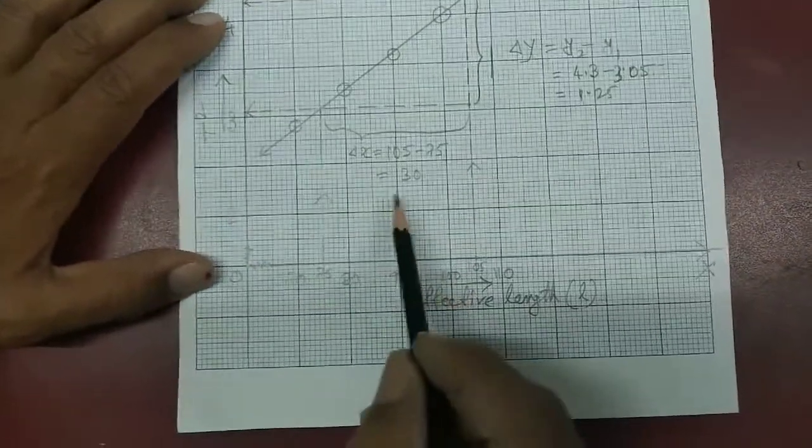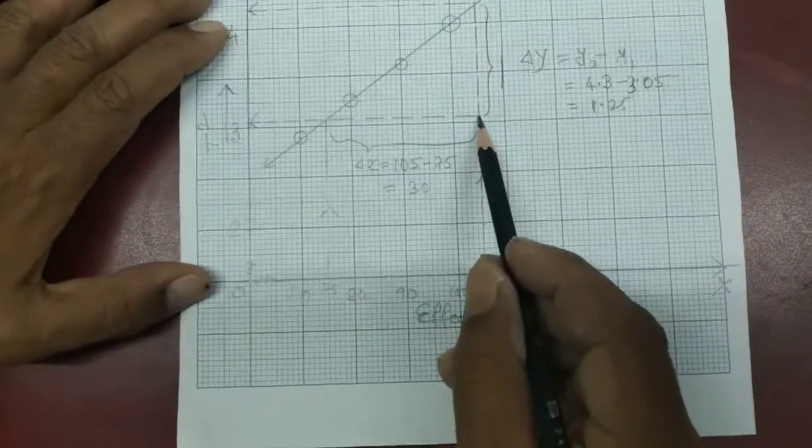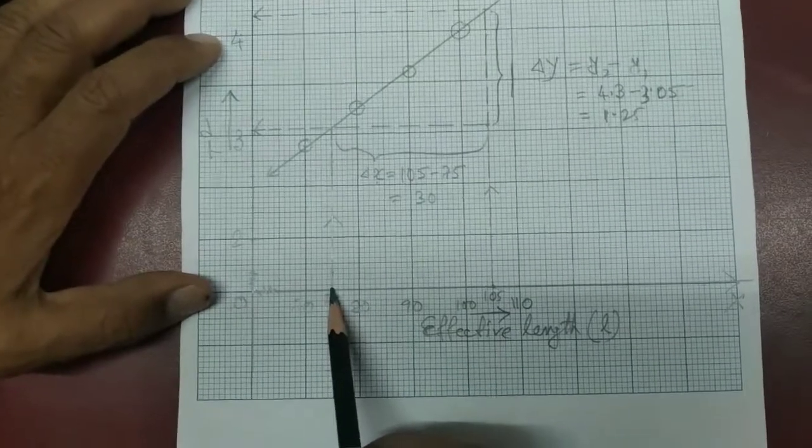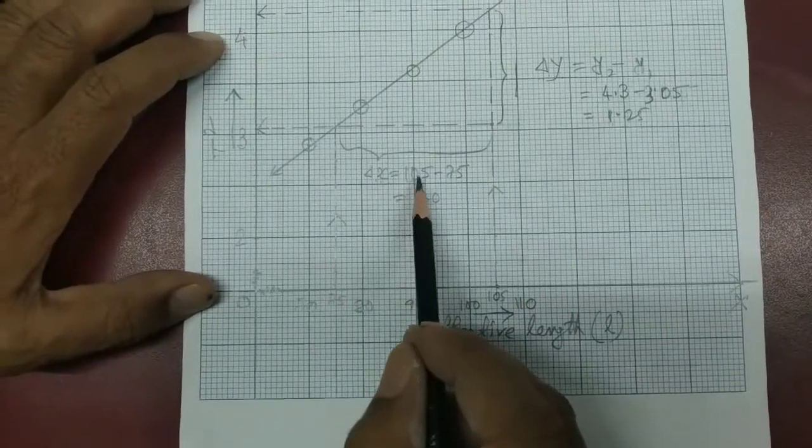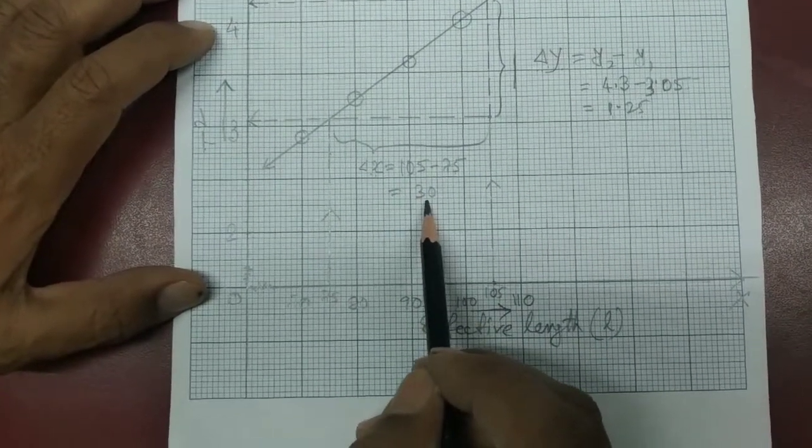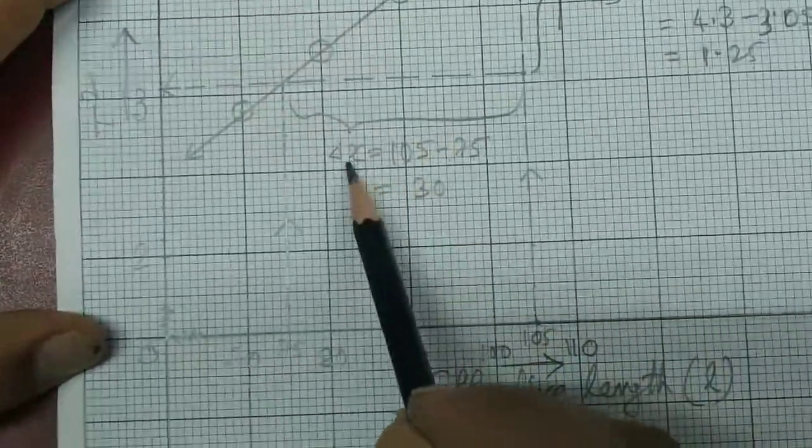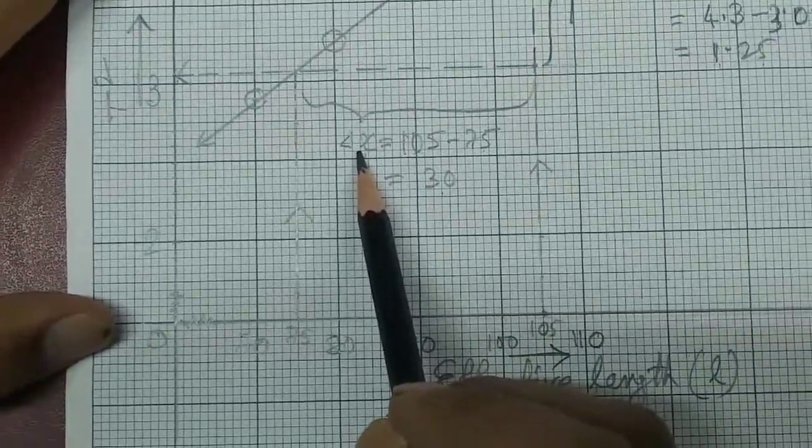for ΔX, it is X2. This value is X2 and this value is X1. So ΔX is equal to 105 minus 75 is equal to 30. Now we have to use this information, ΔY and ΔX, to find the slope.